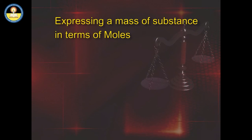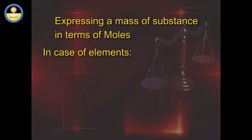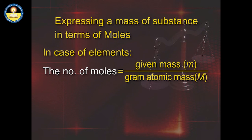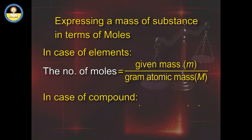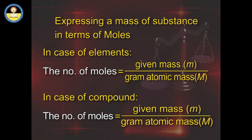Expressing mass of a substance in terms of moles: in the case of elements, the number of moles equals given mass (m) divided by gram atomic mass. In the case of a compound, the number of moles equals given mass divided by gram molecular mass.